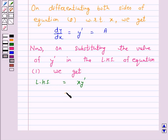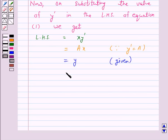and this is equal to ax because y dash is equal to a and this is again equal to y because it is given y is equal to ax but this is our right hand side.